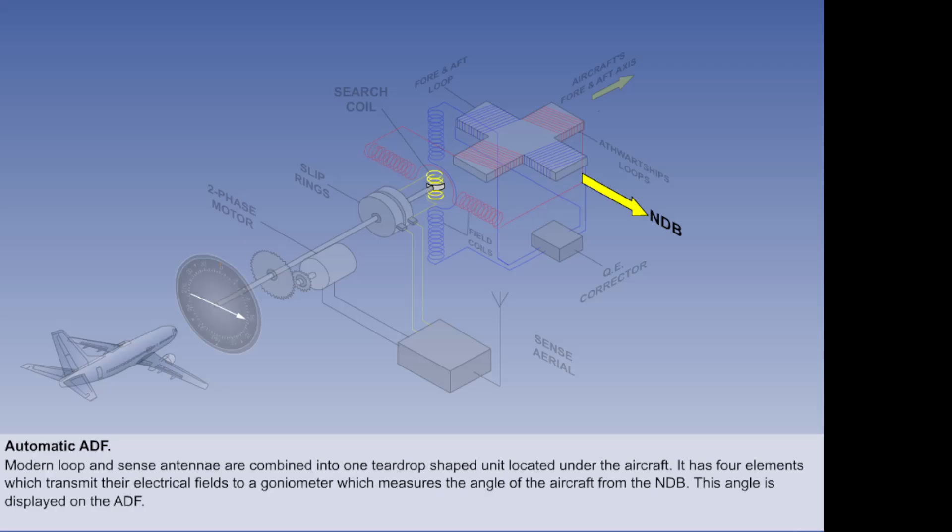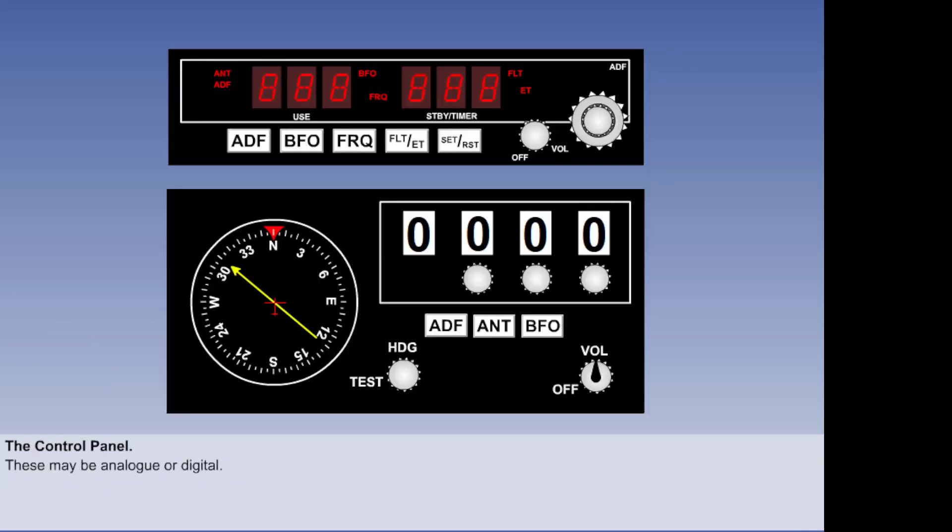The shaft, which at one end turns the search coil, at the other end turns the needle on the ADF display in the cockpit.